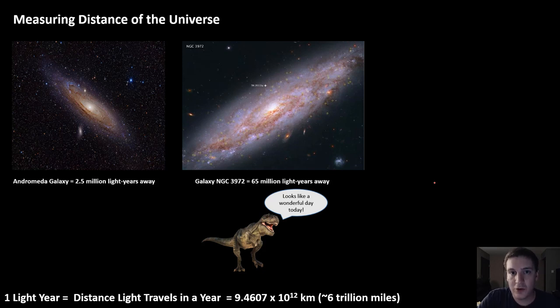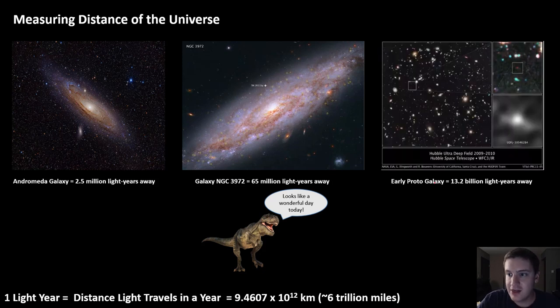Amazingly, we can go even further out. This picture is the oldest picture in the entire universe, because it's a picture of an early proto-galaxy that is 13.2 billion light years away. Now think about that for a second. We know that the universe is roughly 13.7 billion years old. So we're seeing a snapshot of the very, very early universe with this picture.